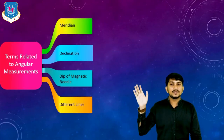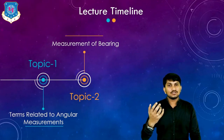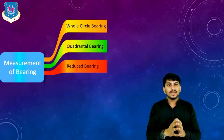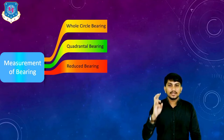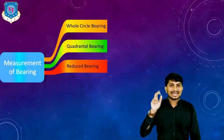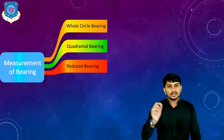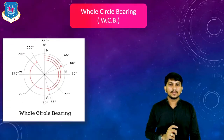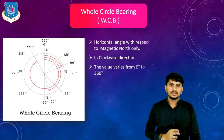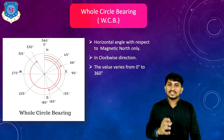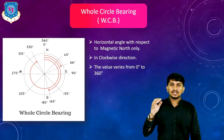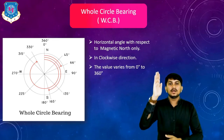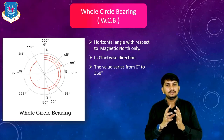That is all about various terms related to angular measurement. Now we will see our second topic of today's lecture which is measurement of bearing. Bearing is the horizontal angle between meridian and the line. It is measured by three methods: first is whole circle bearing method or WCB method, second is quadrantal bearing method or QB method, and third is reduced bearing method or RB method. In WCB, the horizontal angle is with respect to magnetic north only. All angles are made in clockwise direction from magnetic north. This is called WCB or whole circle bearing. The value varies from 0 degree to 360 degree.